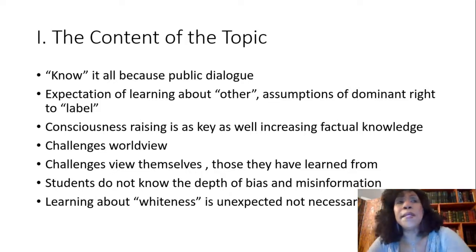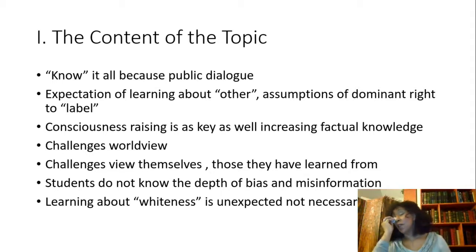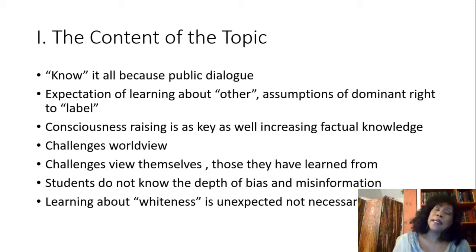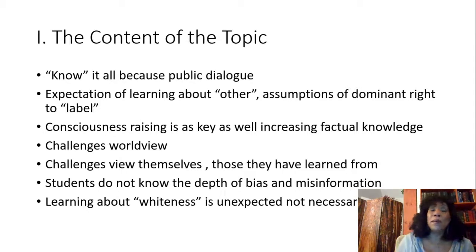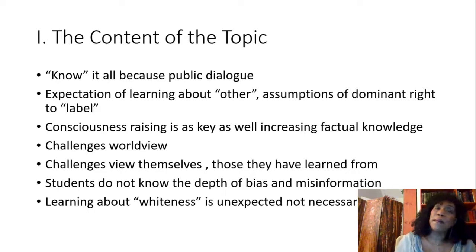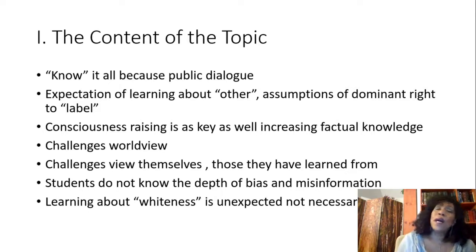Students aren't usually aware of how much misinformation they carry when approaching other kinds of classes. They know they don't know things, but they may not have much misinformation. With this content, it becomes very clear very soon that there has been some mislabeling, misnomer, and just plain wrong things that students have learned about this area that need to be corrected. The final area that's really important — and one students don't expect — is whiteness: what does it mean, what is its significance, and how is it part of the label when we discuss demographics and culture?